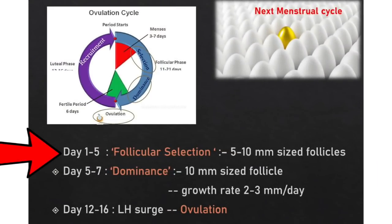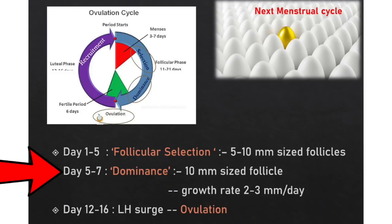During day 1 to 5 of the menstrual cycle, the process of follicular selection begins. During day 5 to 7, the process of dominance begins when a follicle of 10 mm size takes control, grows at the rate of 2 to 3 mm per day, becomes dominant, and suppresses the growth of the rest of the follicles. During day 12 to 16, LH surge starts and the follicle ruptures to cause ovulation.